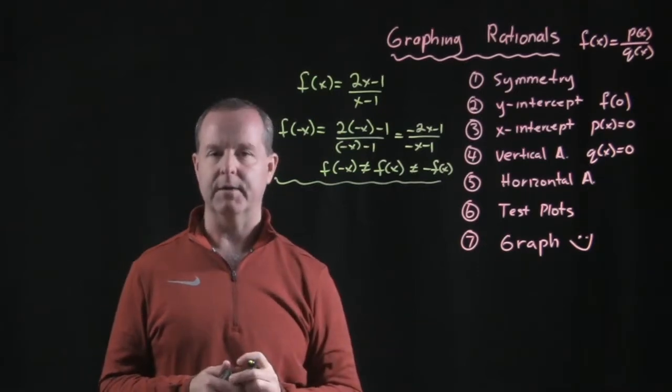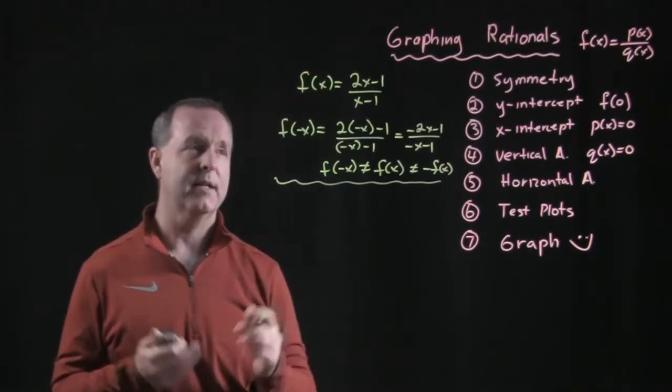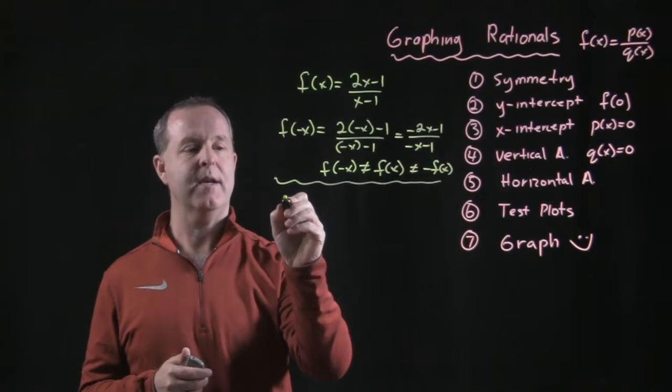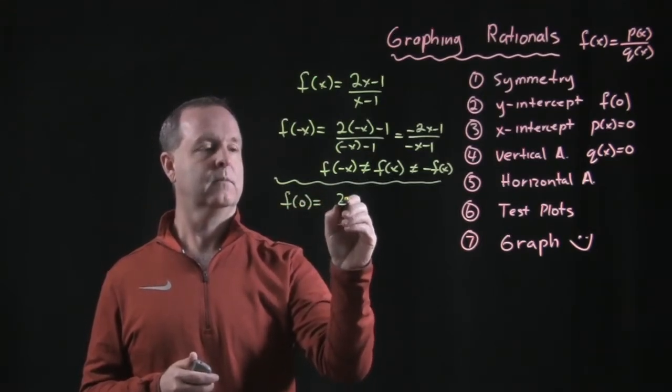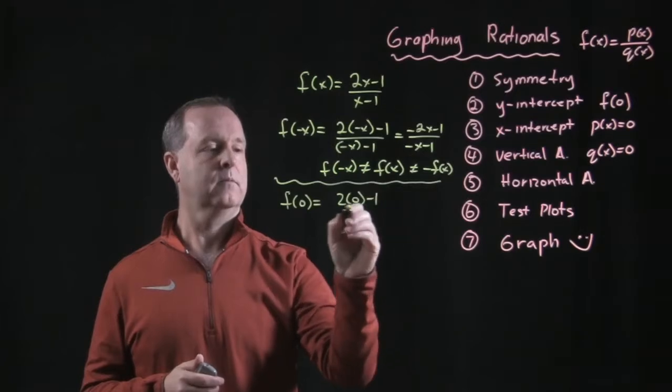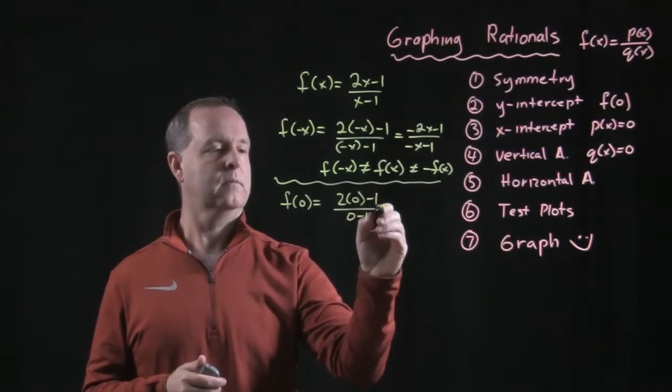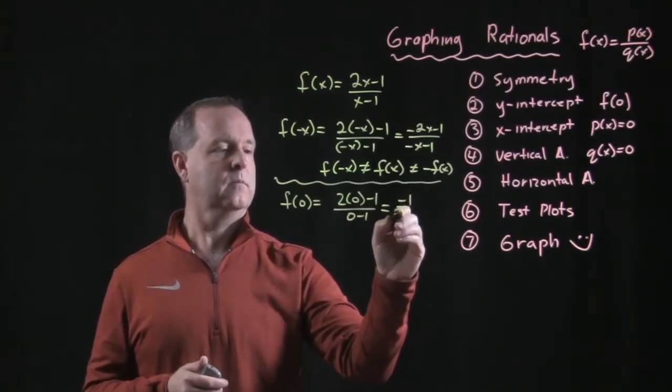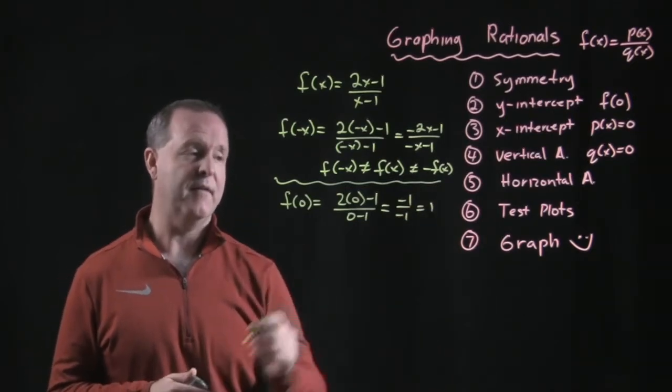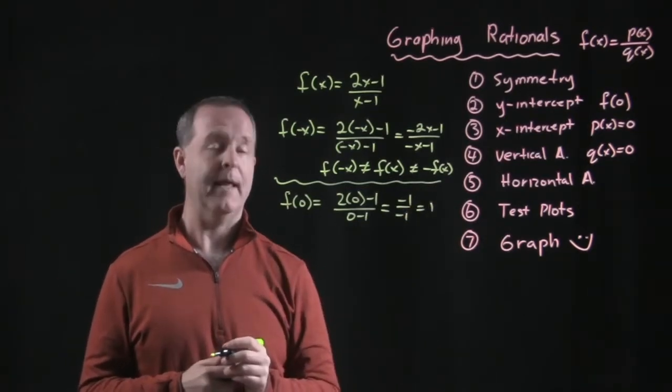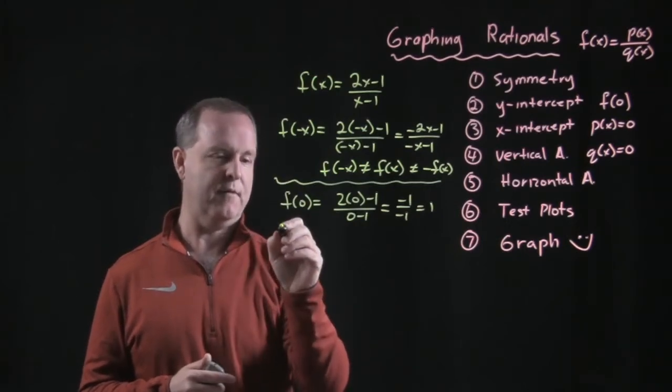Step two, look for its y-intercept. Where does it cross the y-axis? We can determine by evaluating the function at zero. All right, so we found something. We found that it crosses the y-intercept at one. Hold on to that piece of information.